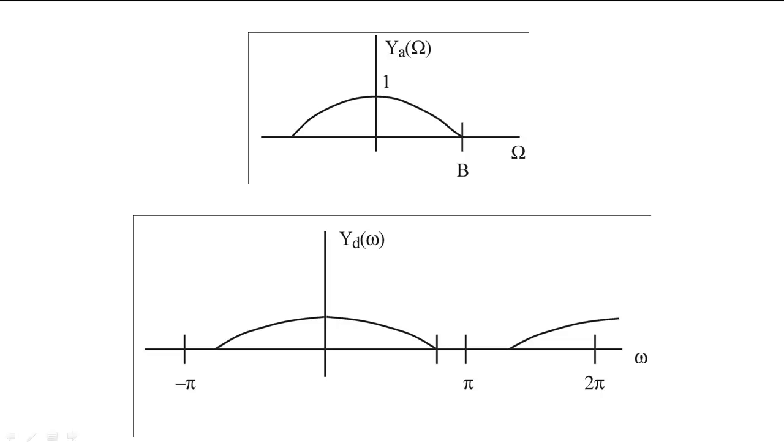First, the signal we are interpolating must be bandlimited to B radians per second. Second, the DTFT of the signal will be bandlimited to B times T1 and will be replicated at every interval of 2 pi. The magnitude of the DTFT will also be scaled.